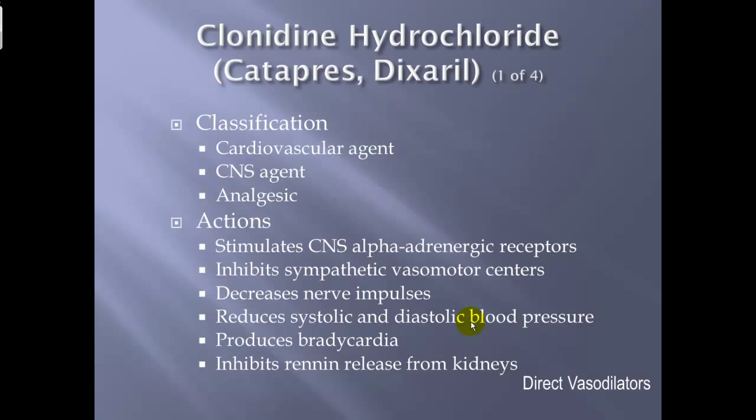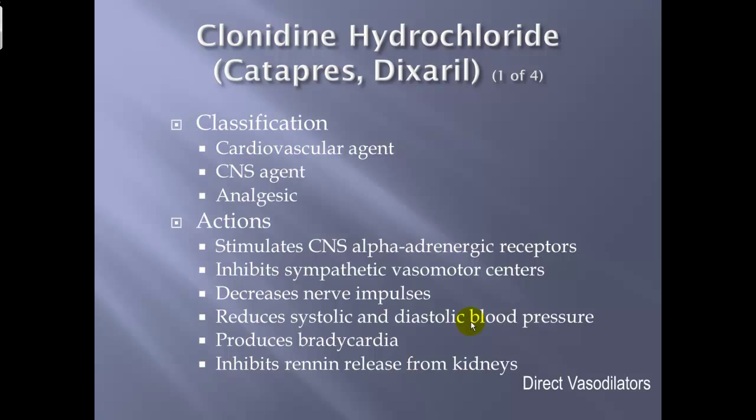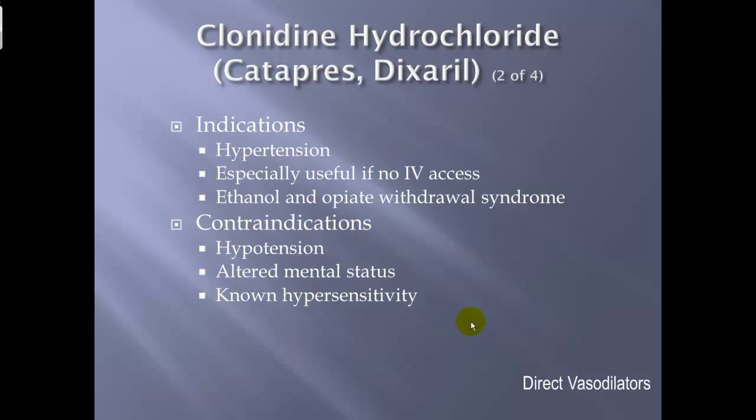Central-acting antihypertensives. Clonidine, or Catapres. Classification: cardiovascular agent, CNS agent, and analgesic. Actions: stimulates CNS alpha adrenergic receptors, inhibits sympathetic vasomotor centers, decreases nerve impulses, reduces systolic and diastolic blood pressures, can produce bradycardia, and inhibits renin release from the kidneys. Indications: hypertension — especially useful when there is no IV access, as it can be given as an oral pill — and ethanol and opiate withdrawal syndrome.